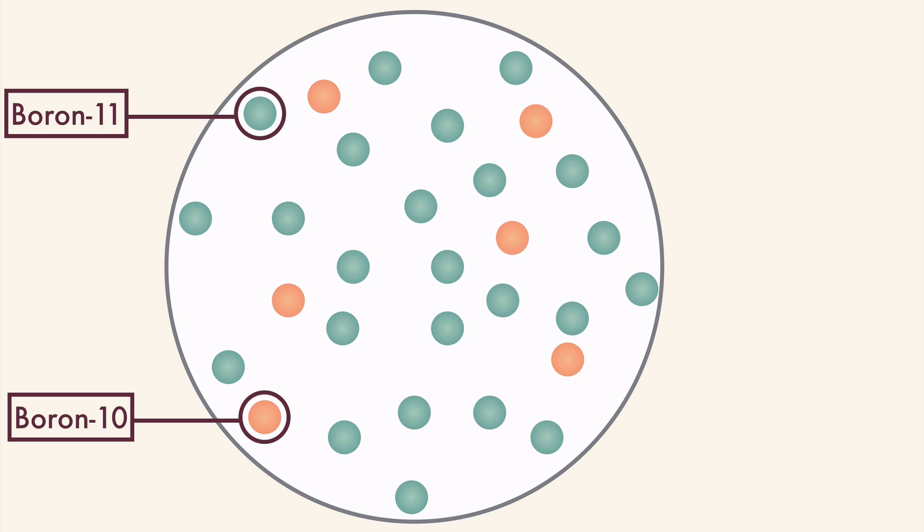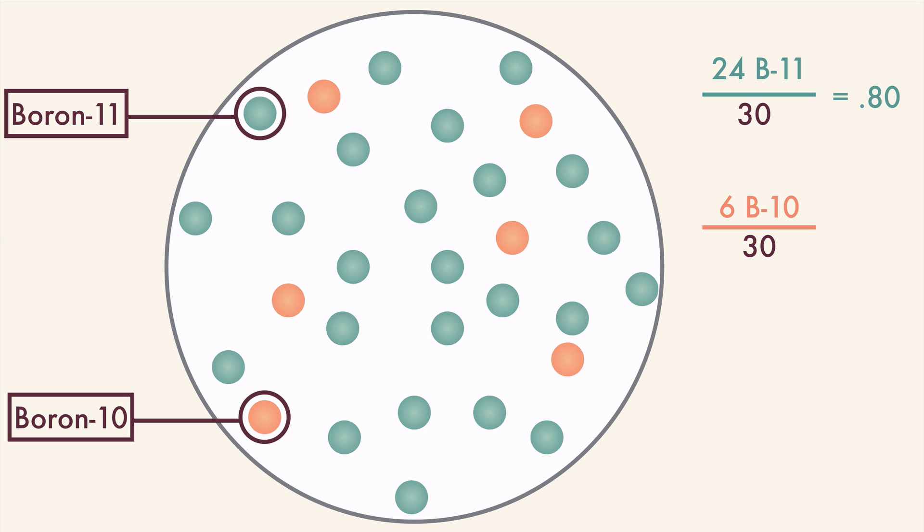In this sample, we have 24 boron 11 atoms and 6 boron 10 atoms, with a grand total of 30 atoms. That means that there are naturally 80% boron 11 isotopes and 20% boron 10 isotopes in nature.